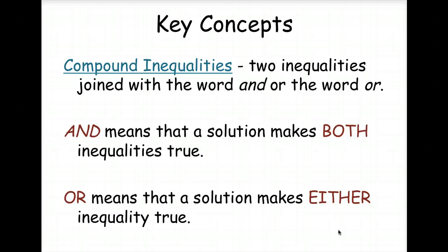Our key concepts for today. Compound inequalities are two inequalities joined by the word and or the word or. When you see and, it means a solution that makes both the inequalities true. And when we see or, it means that a solution makes either of the inequalities true.